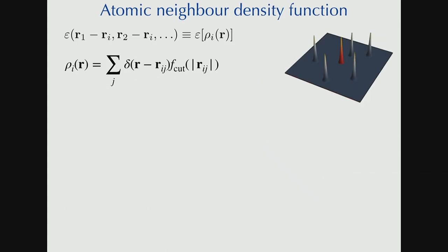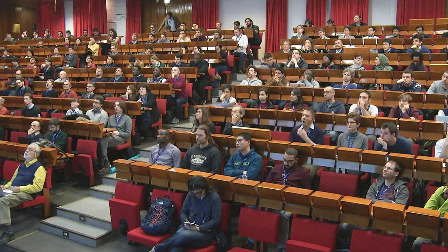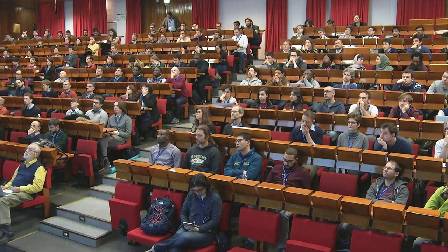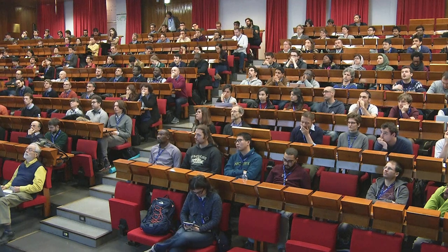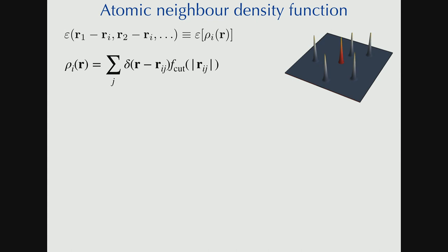So, I want to tell you what our kernel function is. And in order to do that, we need to think about the representation of atoms. So, introduce the atomic neighbor density function. So, think about an atom in the middle, and it has some neighbors. And you could think about putting a delta function at each of the locations of each of the neighboring atoms. And summing them up. And that density, rho of r, is a representation of the neighborhood.